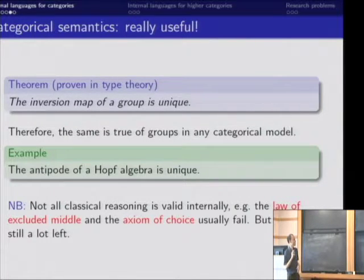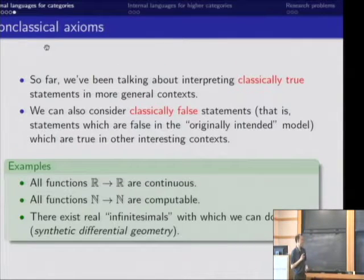The last thing I want to say about internal languages for ordinary categories is that so far we've been talking about classically true statements that are still true when we internalize in other contexts. But we can also consider classically false statements, which are sort of false about sets or things built out of sets in the way we usually think about mathematics. But they might nevertheless become true when we internalize in some other world.